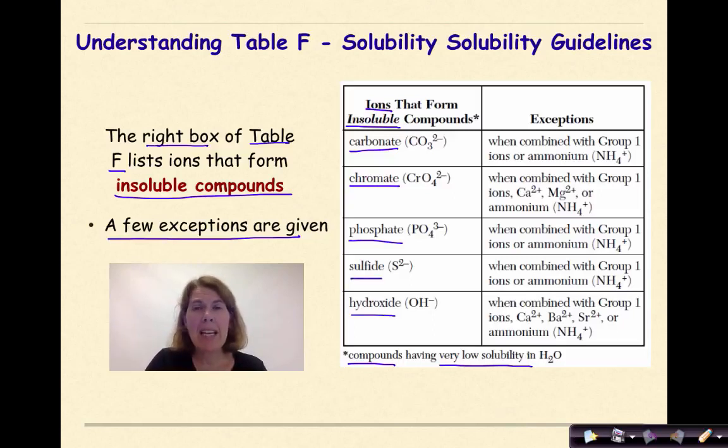So, ions that form insoluble compounds include carbonate, CO3-2, chromate, phosphate, sulfides, and hydroxides. So, in general, if you see that negative ion as part of a compound, your first instinct might be, okay, that is insoluble. It's not going to dissolve. But, of course, we do have exceptions. And, in this case, there's a lot of exceptions. So, carbonate, typically insoluble unless it's combined with our group 1 ions, which makes sense because we know that all group 1 ions are soluble. Or, if that is with ammonium, NH4+, which, again, we know that any compound that has ammonium in it will be soluble.